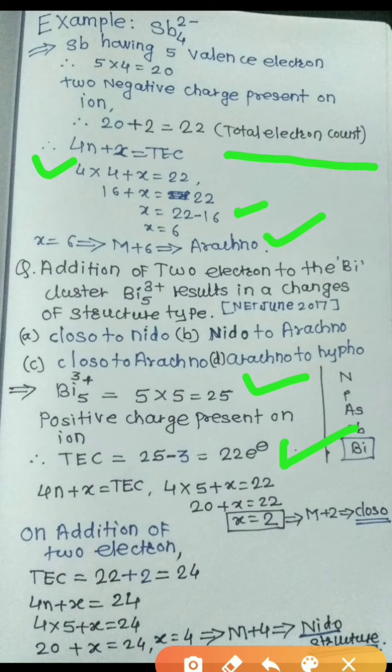Using the formula 4n + x = total electron count: 4 × 5 + x = 22. So 20 + x = 22, therefore x = 2. Since x = 2, Bi₅³⁺ corresponds to the closo structure. Then, the question asks about the addition of two electrons to the bismuth cluster.